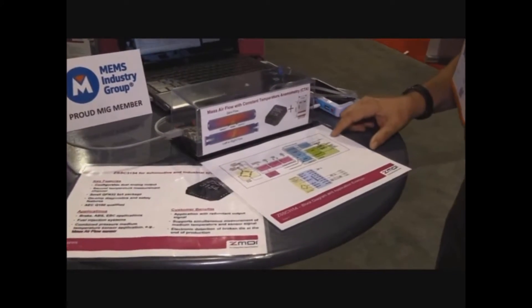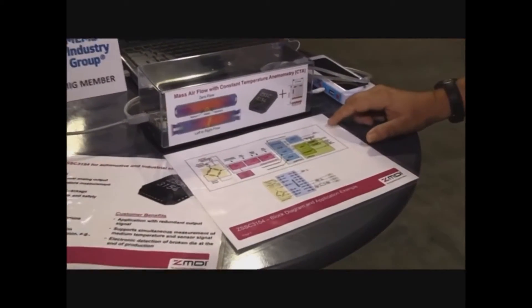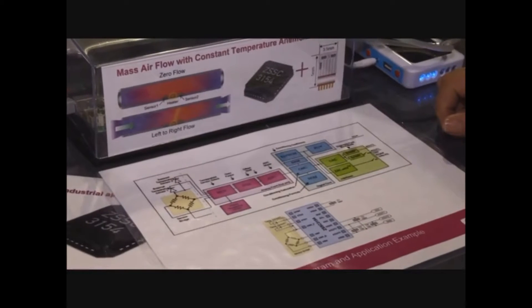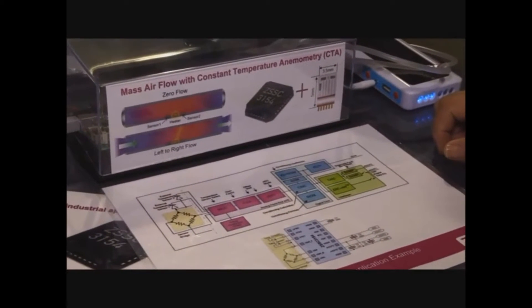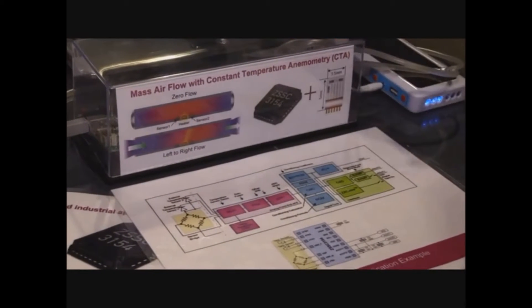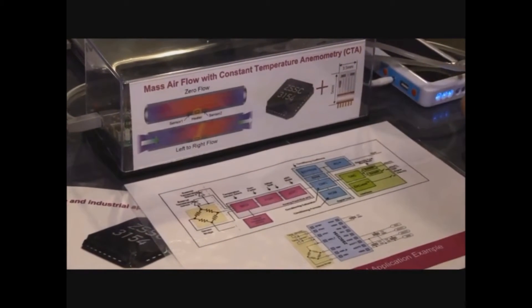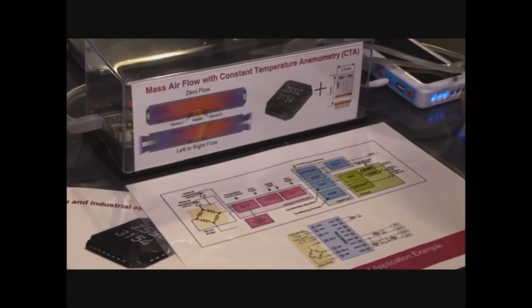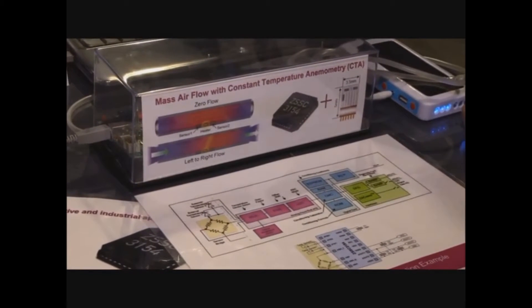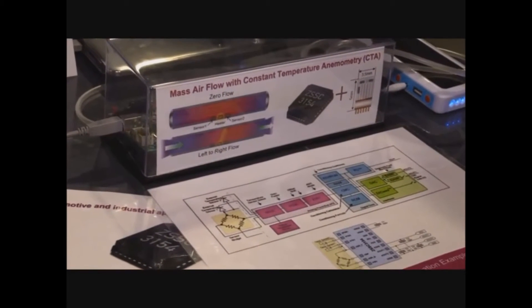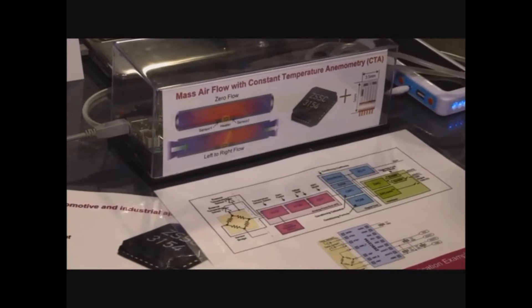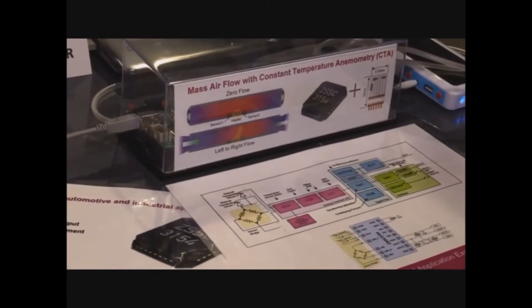Okay, this is a special demonstration board using a constant temperature anemometer to measure airflow. This graphic shows the basic principle. You have a heater in the middle of the flow, the sensors on either side, and to maintain the temperature, you can monitor the mass airflow quantity and the direction.